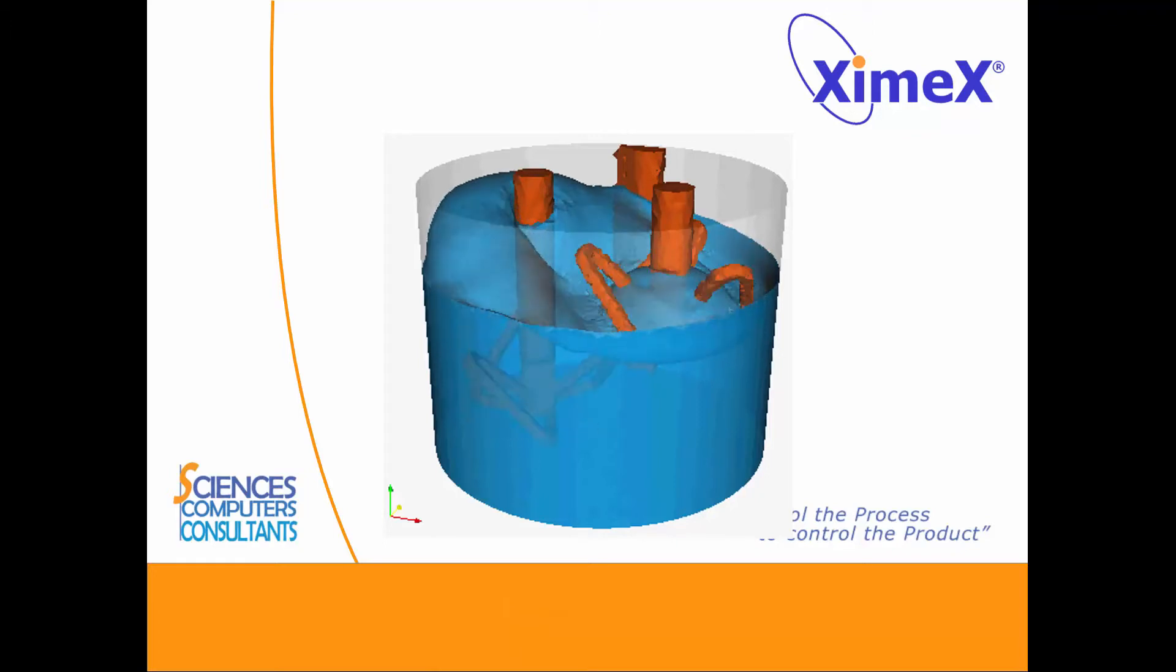CFD results describe the behavior of the material flowing inside the batch mixer. Here, the evolution of fluid level is shown during the mixing time. According to the blade geometry and rotation, the fluid level goes higher in the left side of the tank.